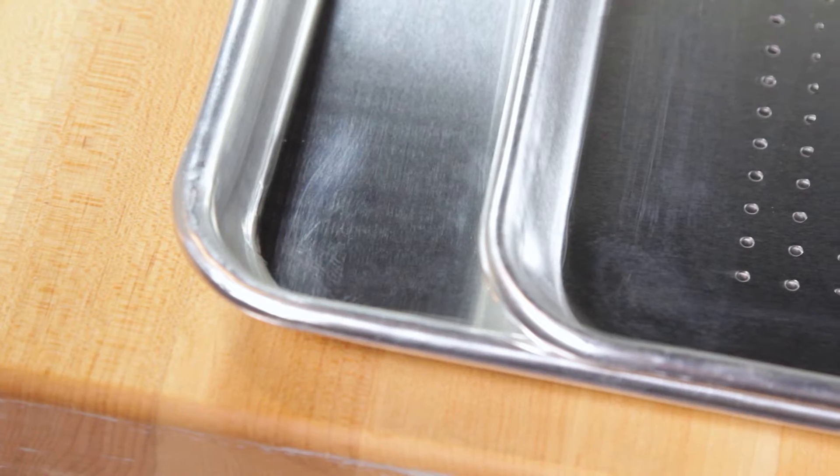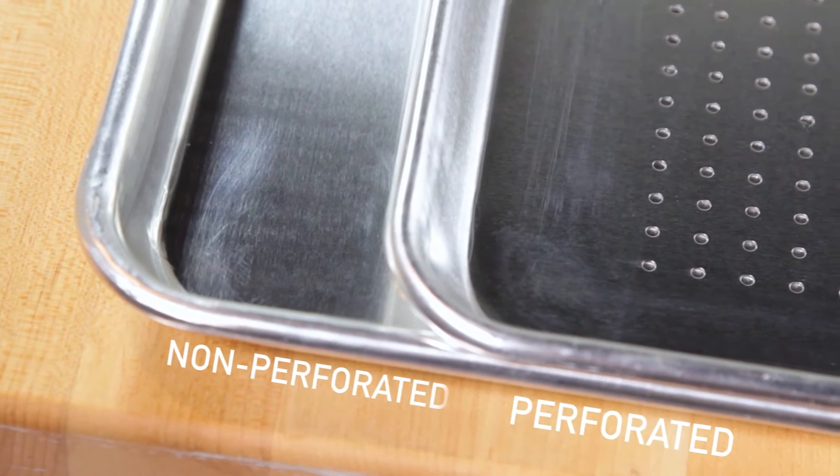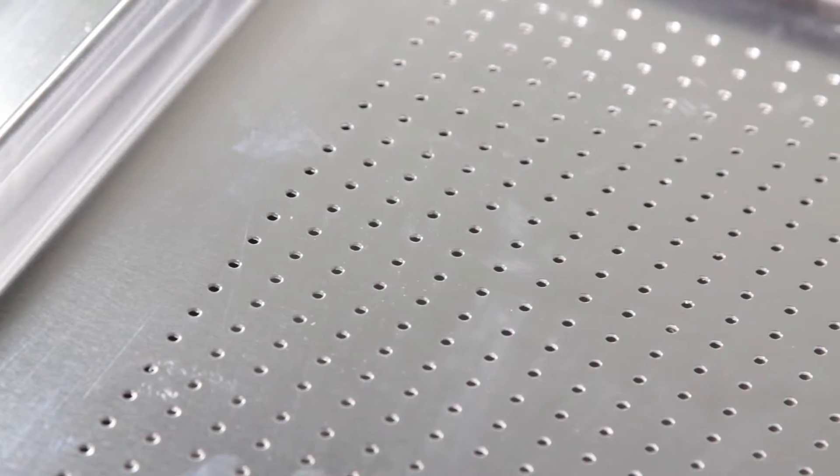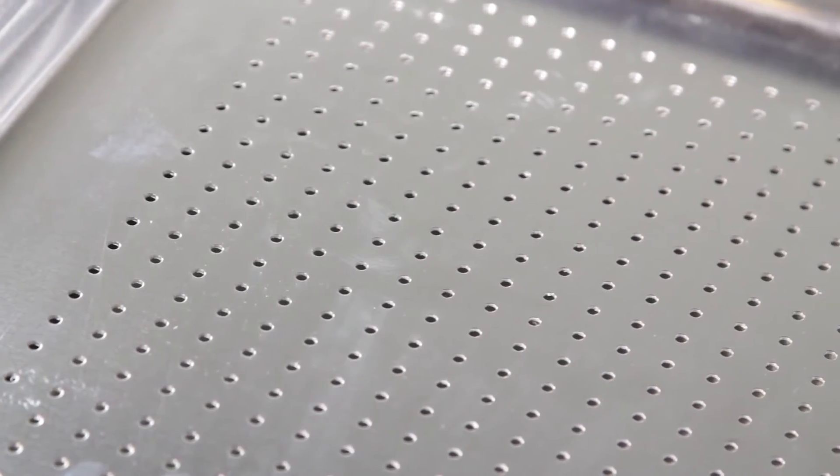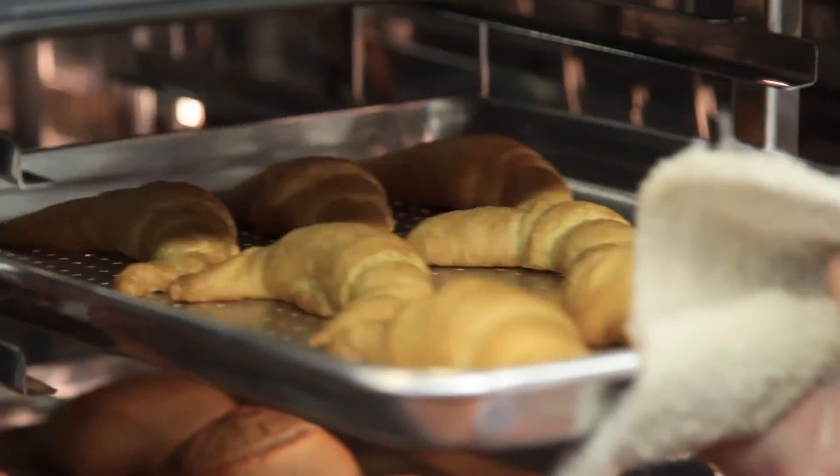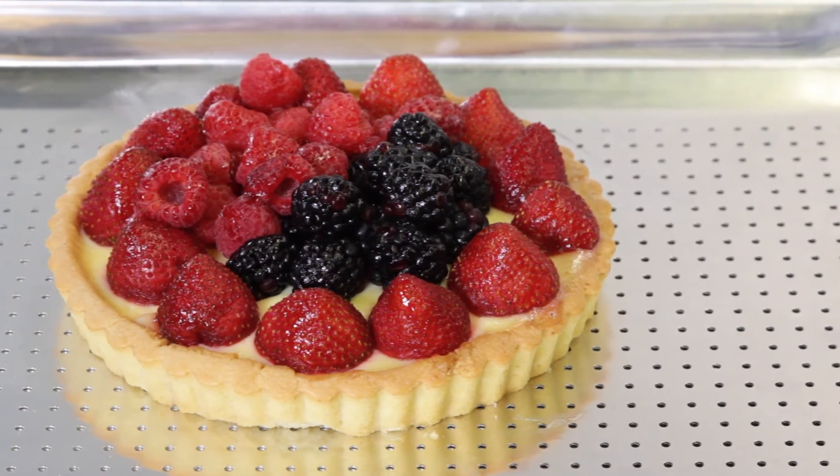First, decide if you'd like a perforated or non-perforated bun pan. The small holes in perforated pans promote the flow of air. Use this type of pan for items with a crispier crust, like tarts and croissants.